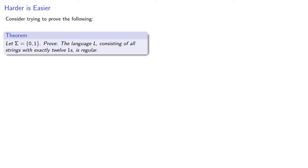So let's talk about one peculiar feature about mathematical proof. Consider trying to prove the following: let our symbol set be 0 and 1, and let's prove that the language consisting of strings with exactly 12 ones is regular.